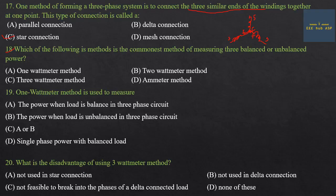The commonest method of measuring balanced or unbalanced three-phase power is the 2-watt meter method. The 1-watt meter method has limitations and measures power only when the load is balanced. Twentieth question: The disadvantage of using the three-watt meter method is that it is not feasible to break into the phases of a delta-connected load. Option C is the answer.